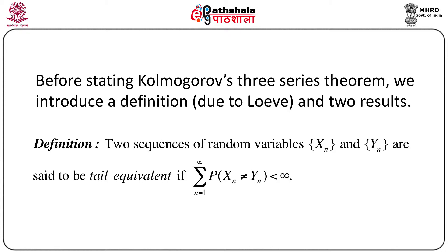Before stating the three series theorem, let me introduce one definition due to Loève and two other results. The definition: two sequences of random variables x_n and y_n are said to be tail equivalent if the summation from n equals 1 to infinity of the probability that x_n is not equal to y_n is less than infinity. It is natural that Kolmogorov's three series theorem involves this concept.